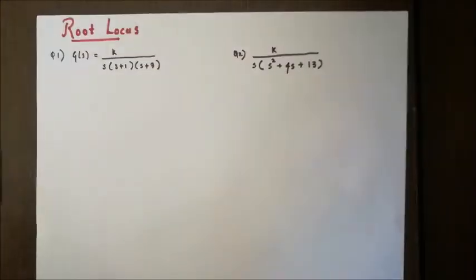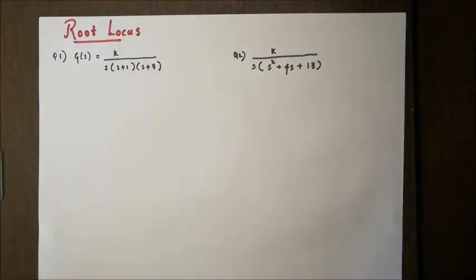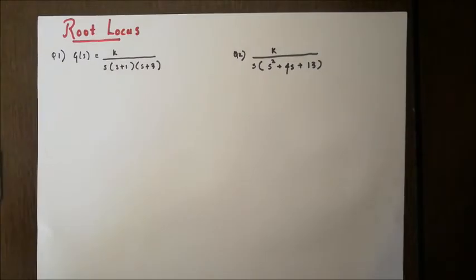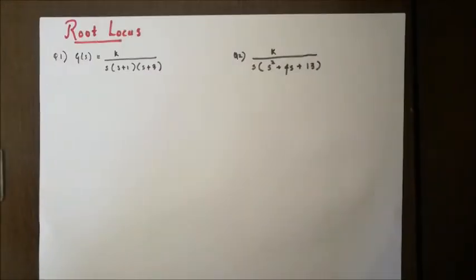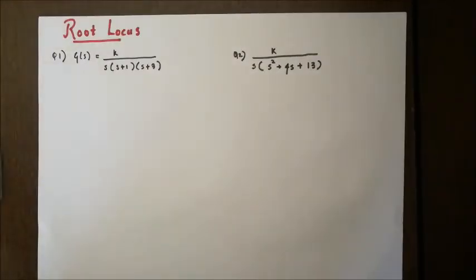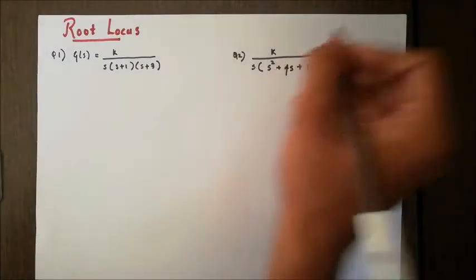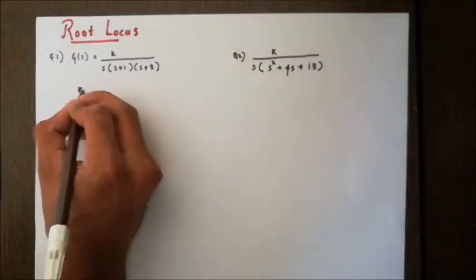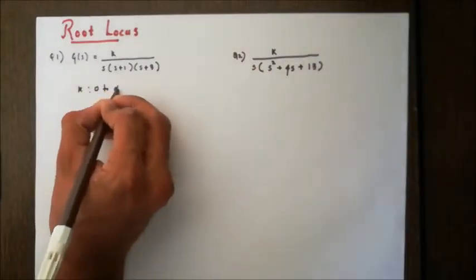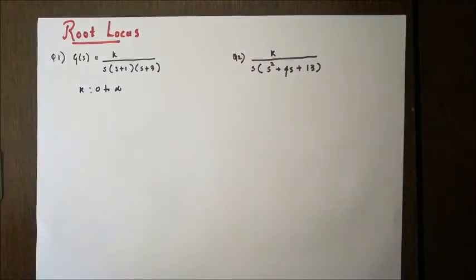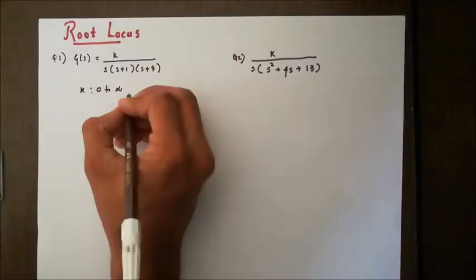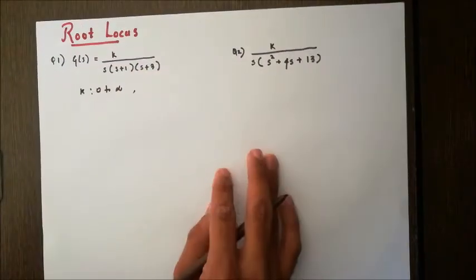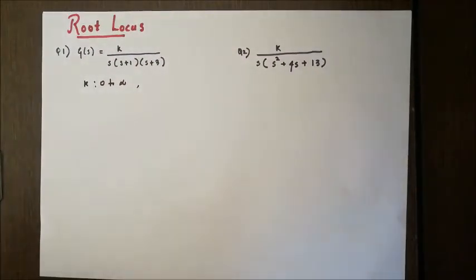So what is a root locus? A root locus is the path taken by the roots of the characteristic equation when the open loop gain K is varied from 0 to infinity. When we vary K from 0 to infinity, we get a locus or path traced by the roots of the characteristic equation — that is what we call the root locus.